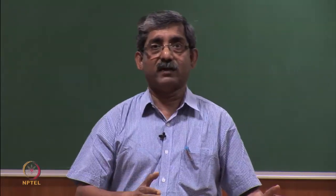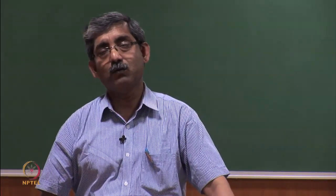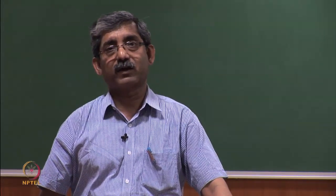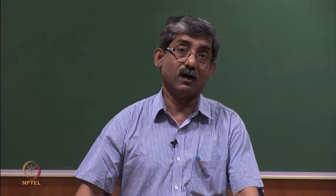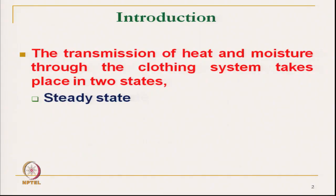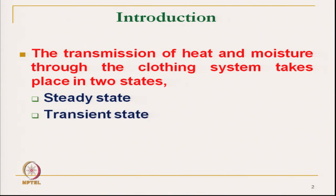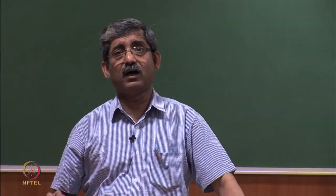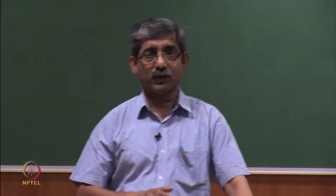It is a dry heat transmission through clothing and how this transmission affects the comfort sensation of humans. The transmission of heat and moisture through a clothing system takes place in two states: one is the steady state condition and another is the transient state condition.